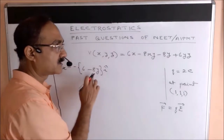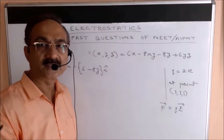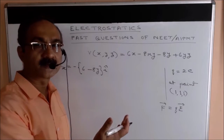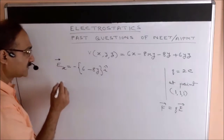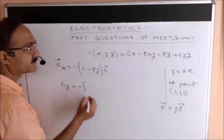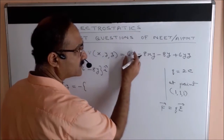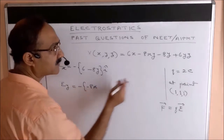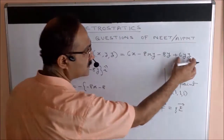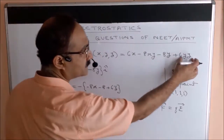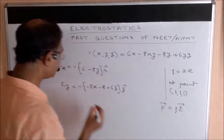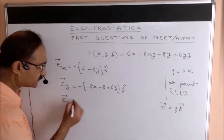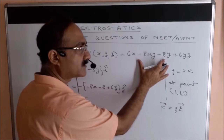The partial differentiation has been explained in detail in the 2009 question video, so refer to that if needed. Similarly, Ey = −∂V/∂y. Differentiating with respect to y: the first term gives 0, the term with y gives −8x, and another term gives +6z. So Ey = (−8x + 6z), written with ĵ.